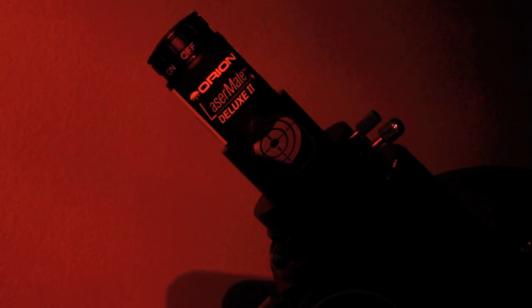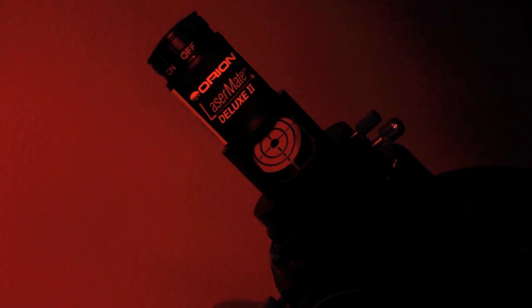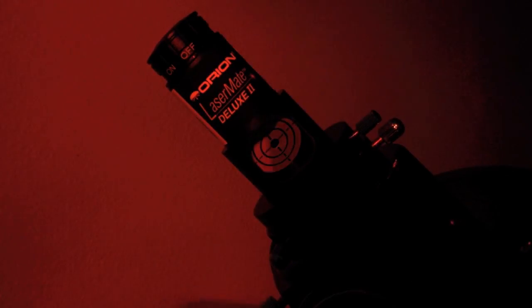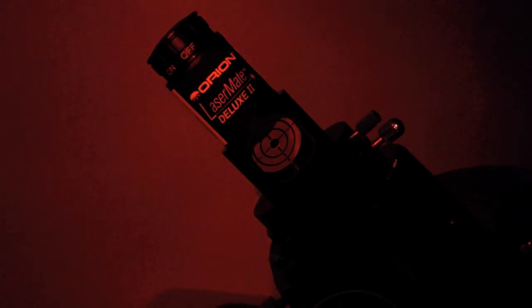So to recap, to collimate with this laser collimator, make sure it's level on the focuser so that the laser is pointing straight down the tube. Then collimate your secondary mirror by loosening one secondary screw at a time. Loosen one screw, tighten one screw. You'll learn which direction each screw pushes the dot. Put that center dot on top of your center spot on your primary mirror. Tighten your secondary screws.